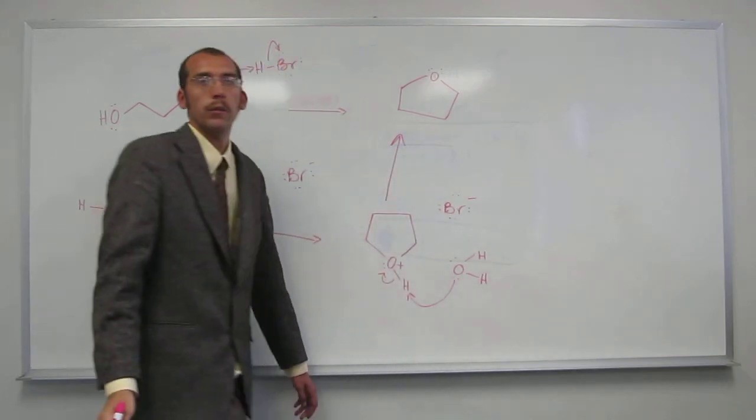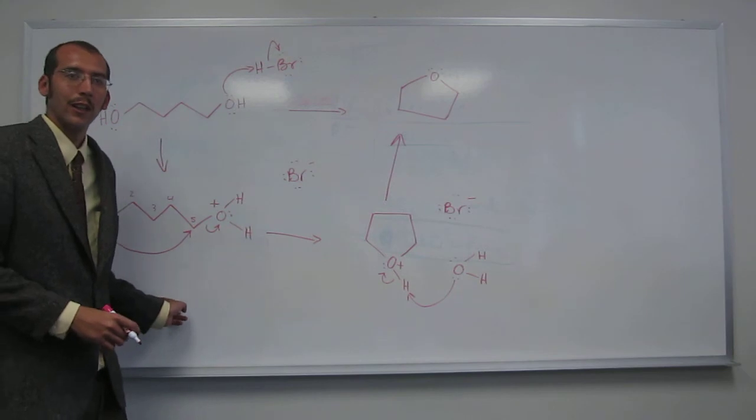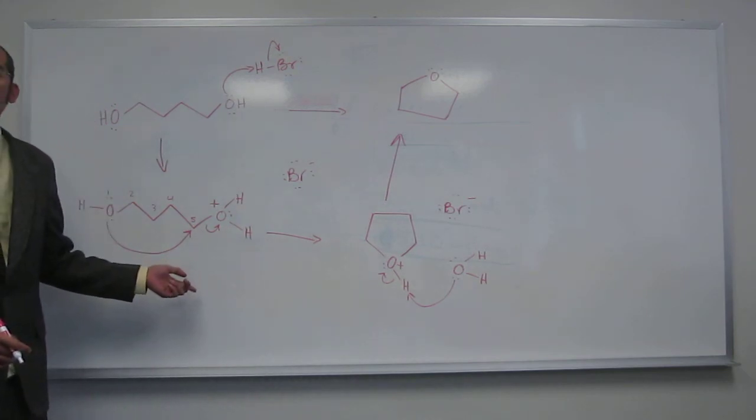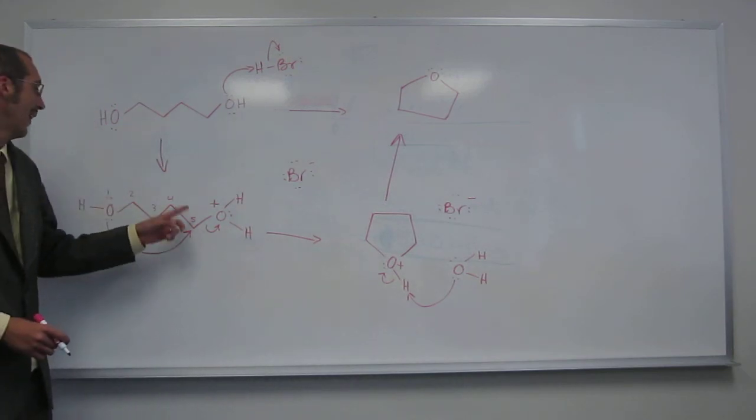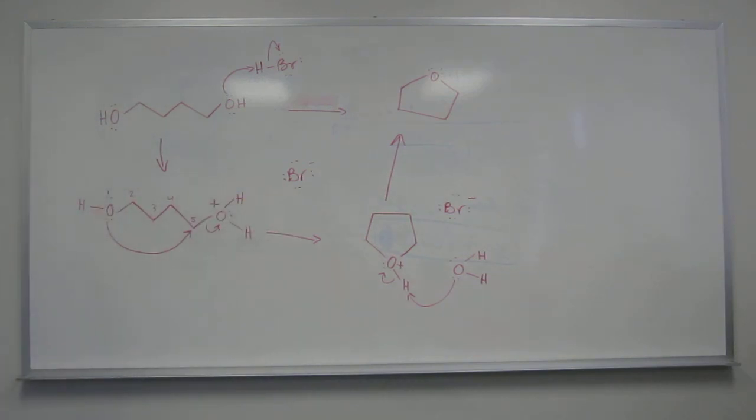And you're going to form that five-membered cyclic ether. So you've got two things working against you. Not only is this oxygen attached to the thing and it's a five-membered ring, but it's a better nucleophile than bromine is. So are there any questions about that?